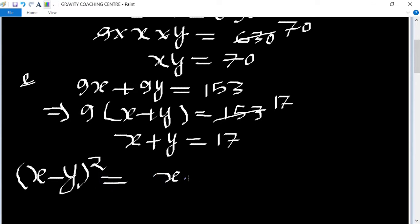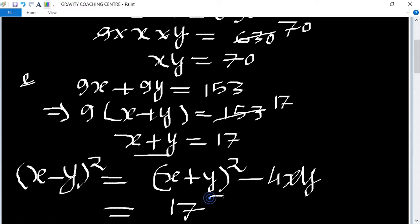X plus Y whole square minus 4XY. And now we put the values: X plus Y is 17 square minus